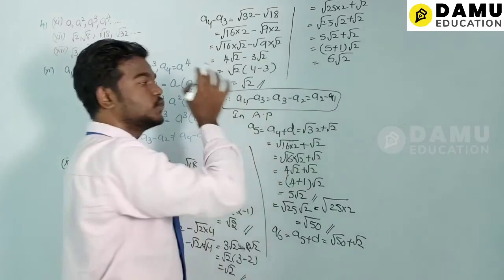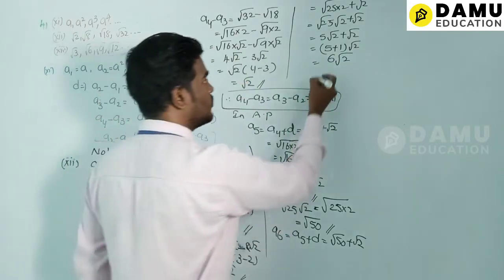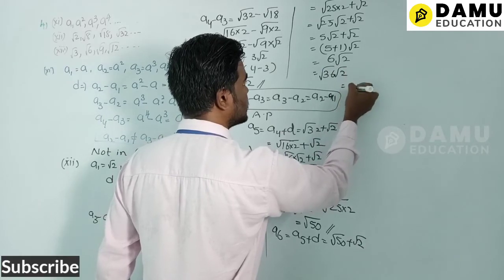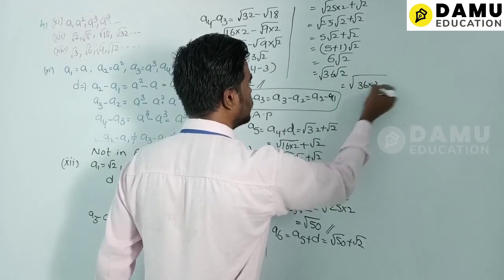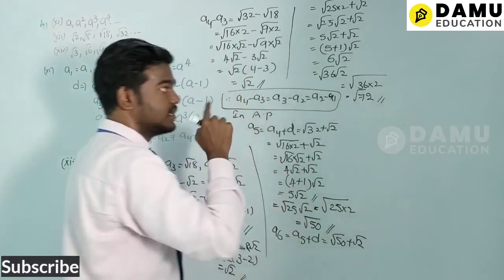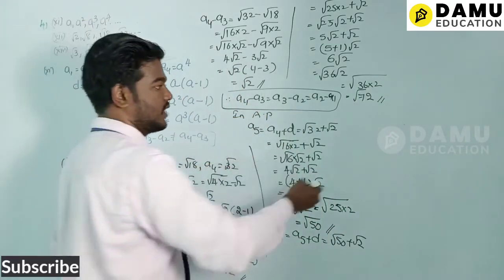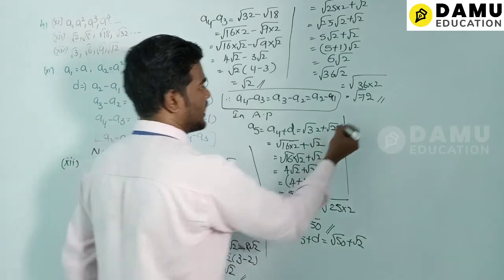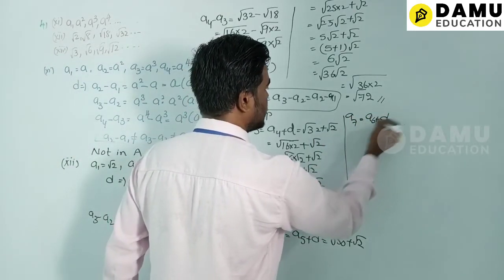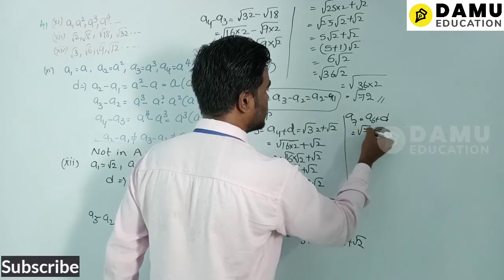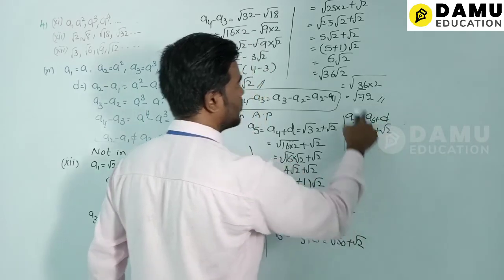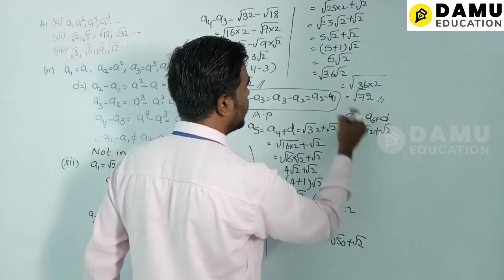Then a7 = a6 + d = √72 + √2. Writing √72 = 6√2, we get 6√2 + √2 = (6 + 1)√2 = 7√2.